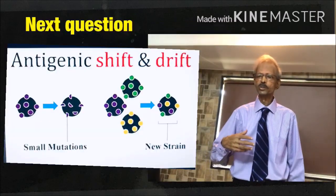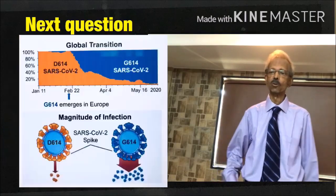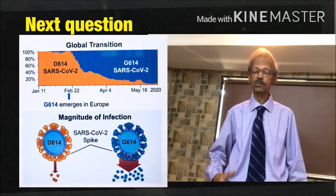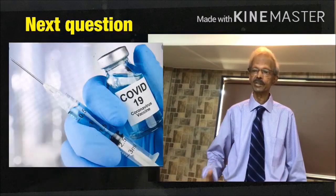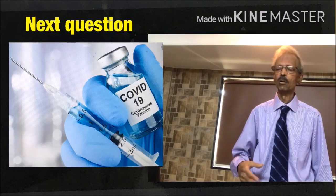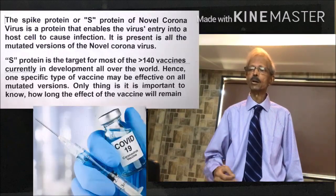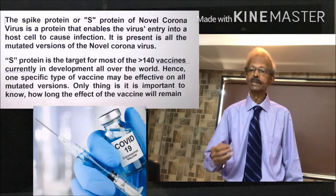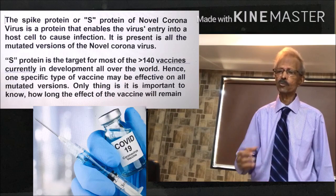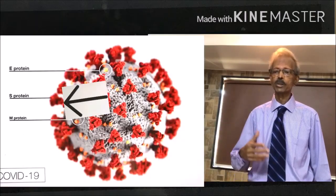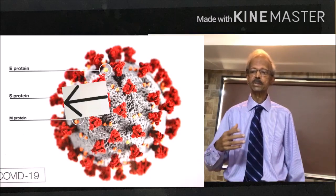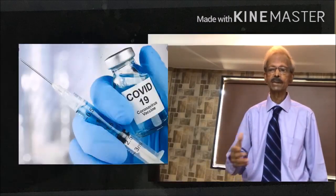The question is: if many mutated versions of novel coronavirus are in circulation, will one type of vaccine, when approved, be effective to treat COVID-19? The answer is that most vaccines in development worldwide target the spike protein — the ACE2-binding protein — which is common in all mutated versions of novel coronavirus. Hence, one type of vaccine may be effective.